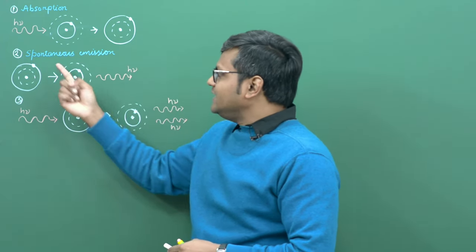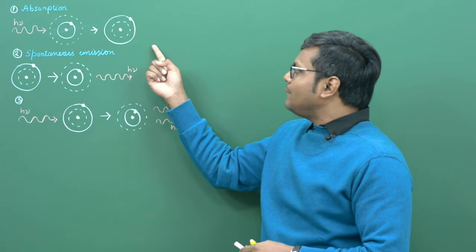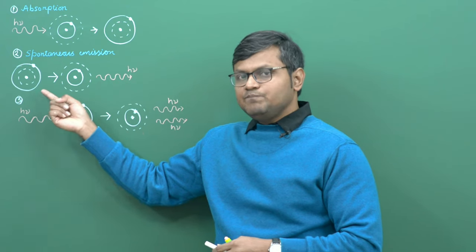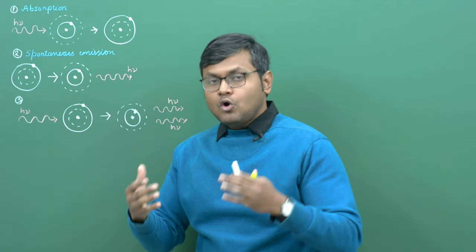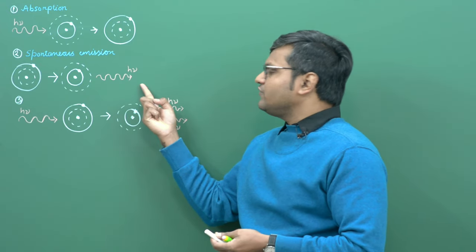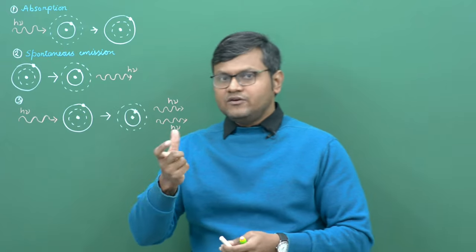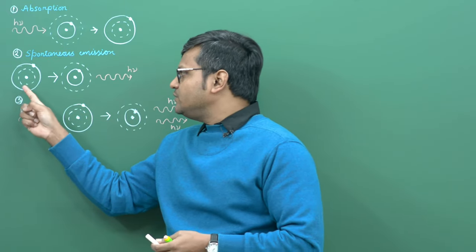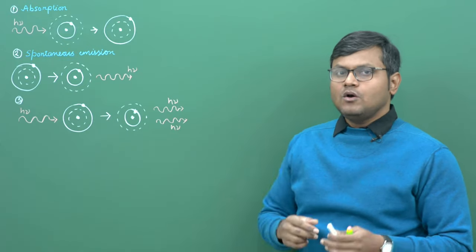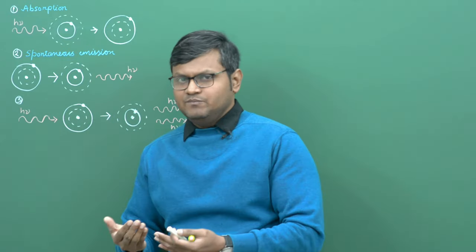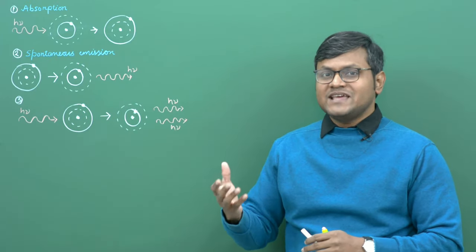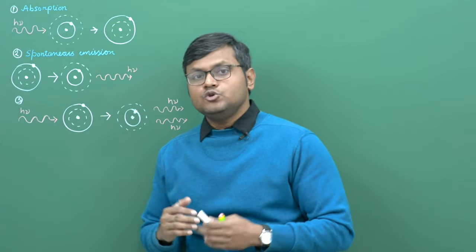The second case is spontaneous emission. When an atom is in the excited state, it can automatically or spontaneously come down to its ground state with the release of a photon, and that photon has energy equal to the difference in energies between the excited and the ground state. This is known as spontaneous emission because it happens spontaneously. It usually takes a time of around 10⁻⁸ to 10⁻¹² seconds for a spontaneous emission to take place.